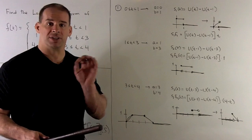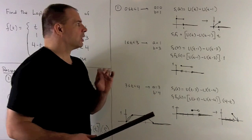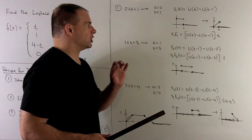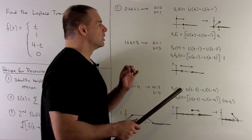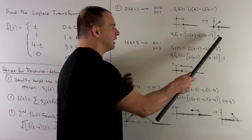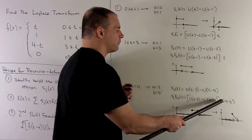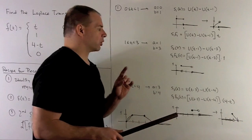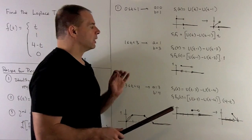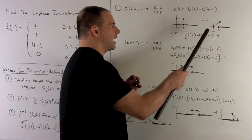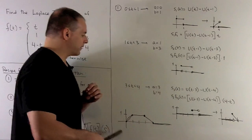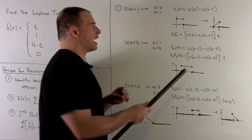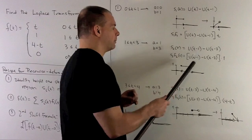We take each of our step functions and multiply by the function that goes with each region — t, 1, and 4 minus t respectively. Looking at the graphs, we're basically taking the graph of the entire function and breaking it down piece by piece.